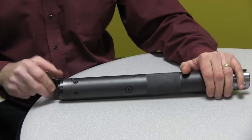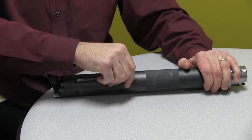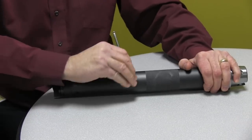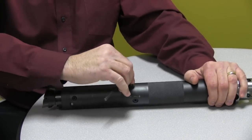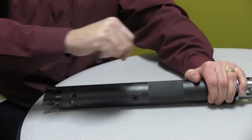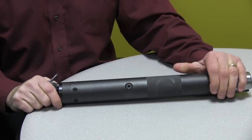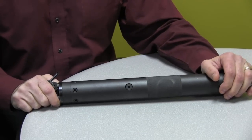After we do that, we lock down our two lock screws, one on each side. And then we will go ahead and make a pass on our test piece and see what we get.